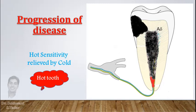So if you open a tooth and find profound bleeding from the pulp, it cannot be a hot tooth. Rather, if you are facing issues in these kind of cases, this is because of inadequate anesthesia. In hot tooth, profound bleeding is not expected.